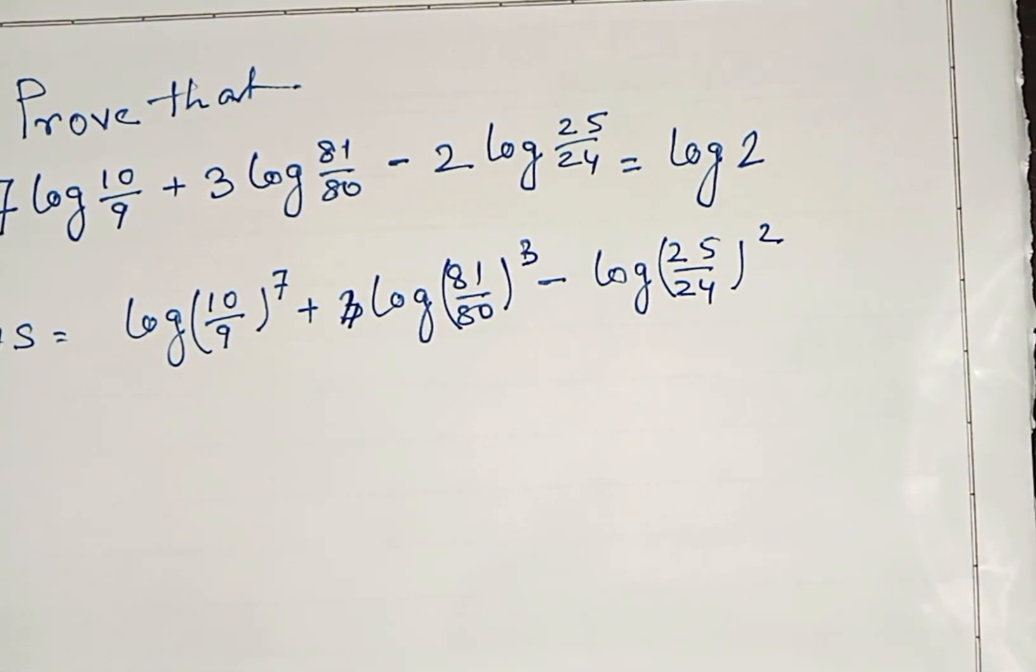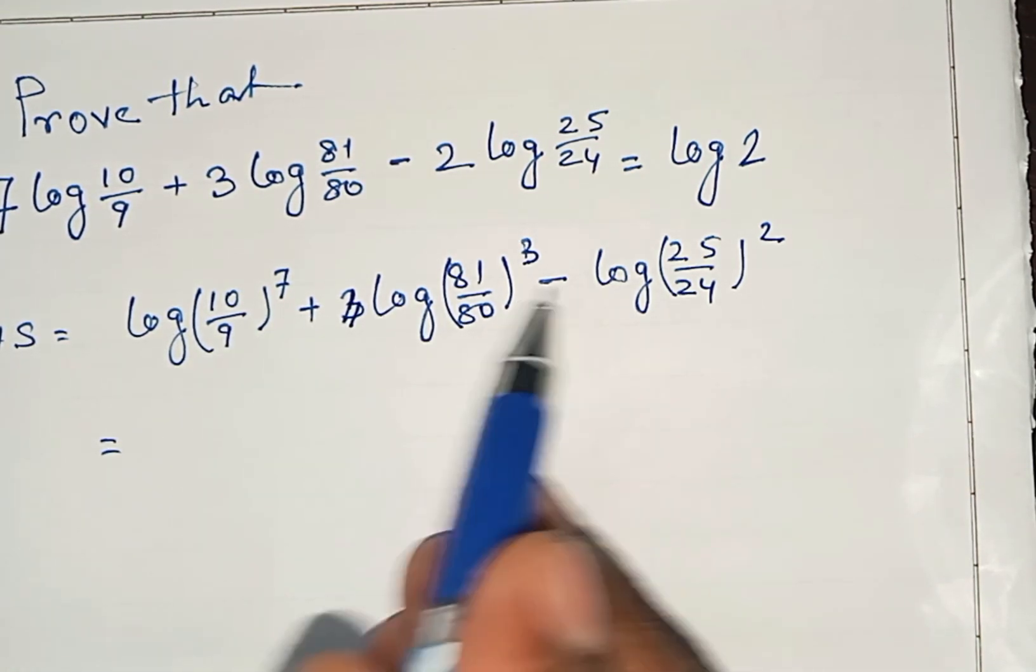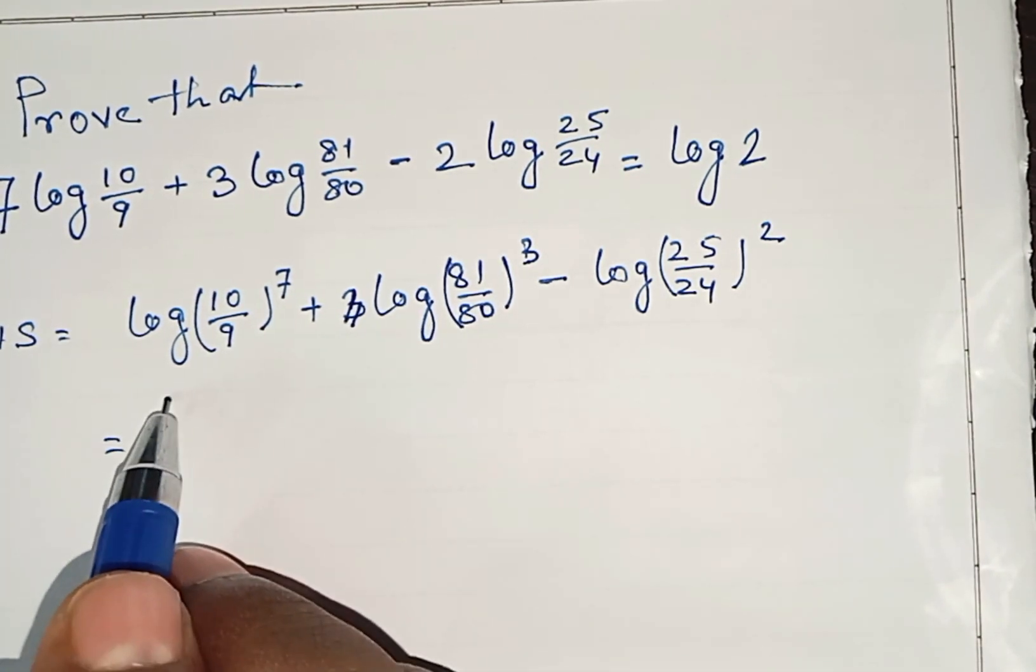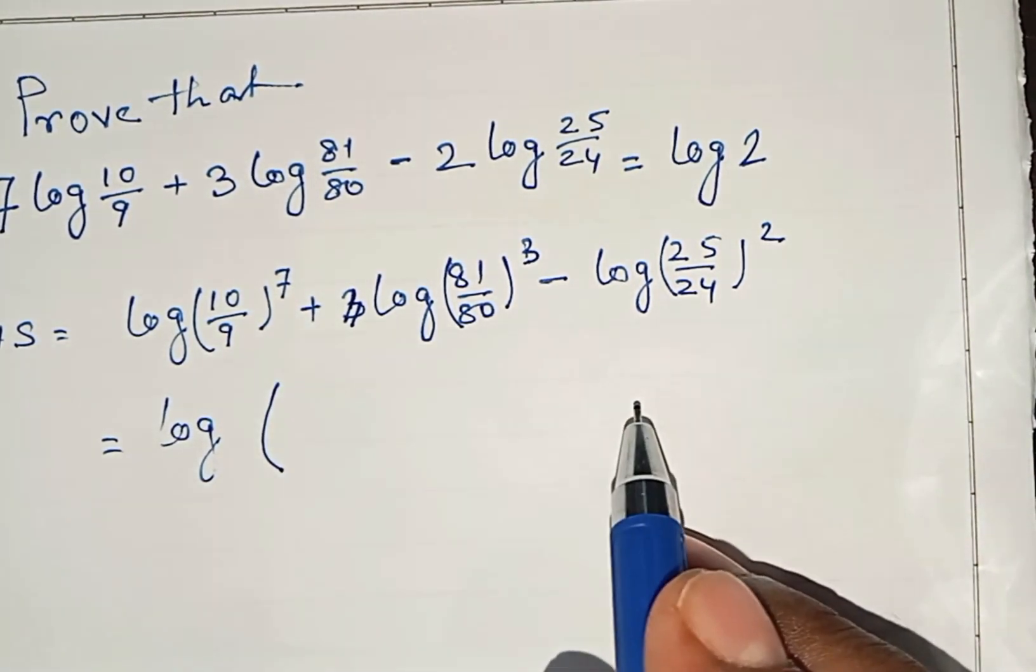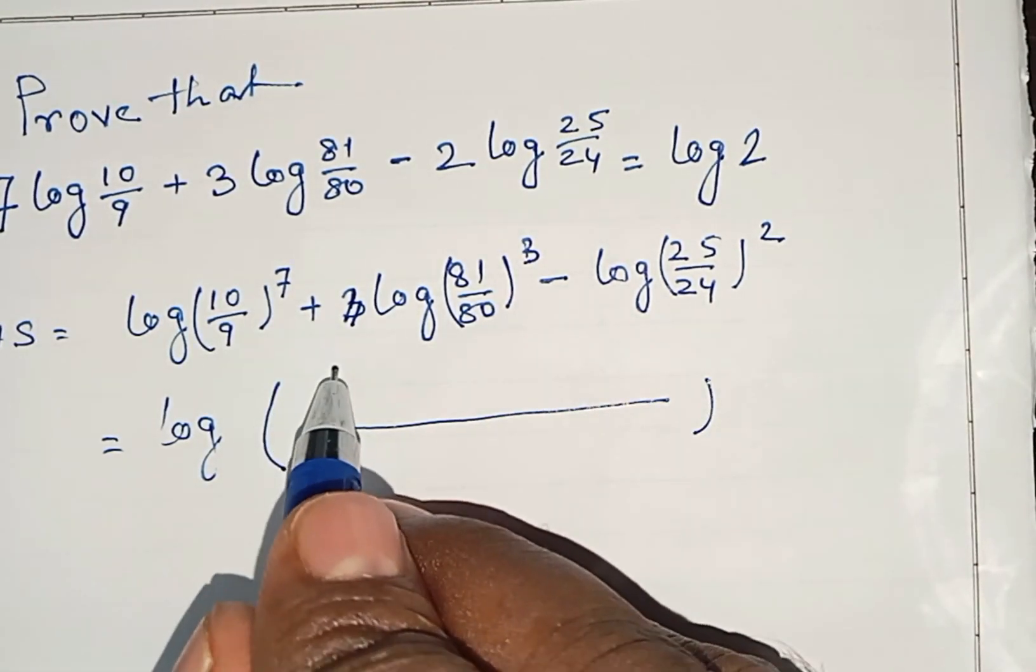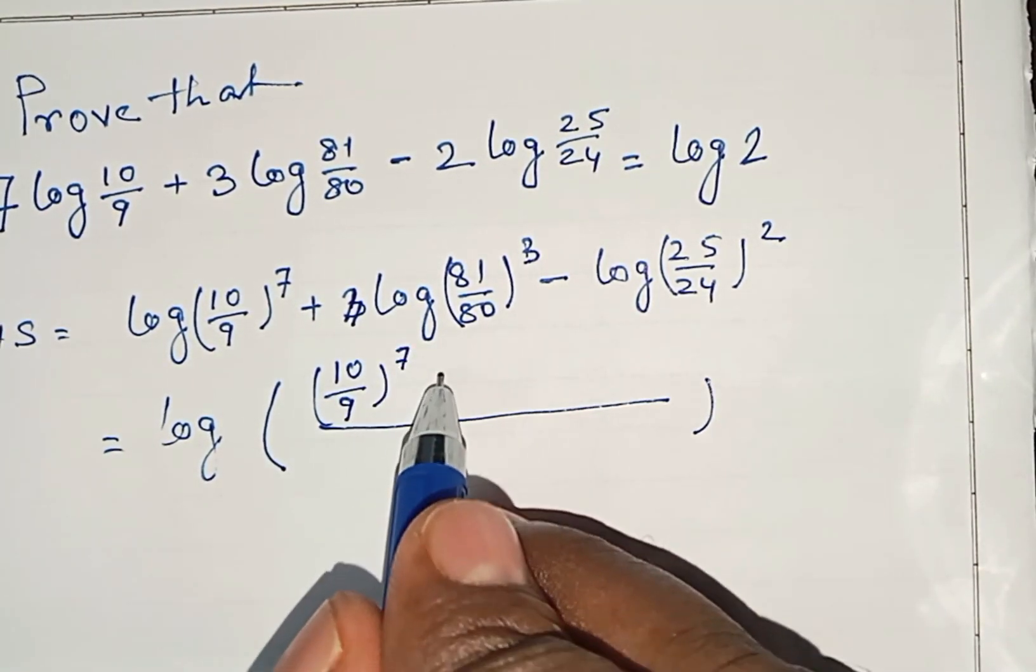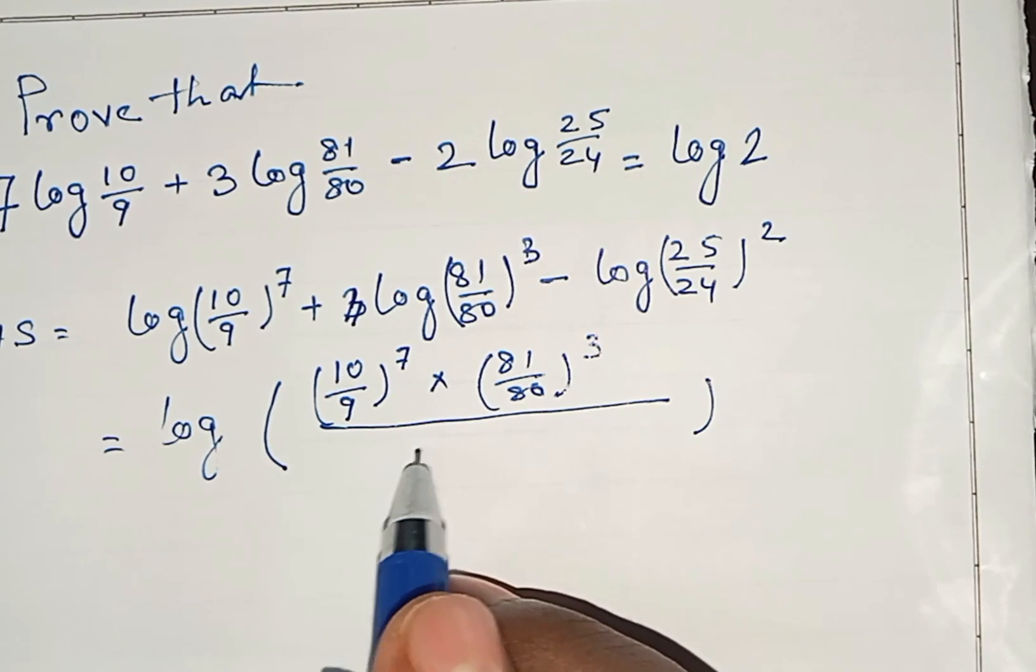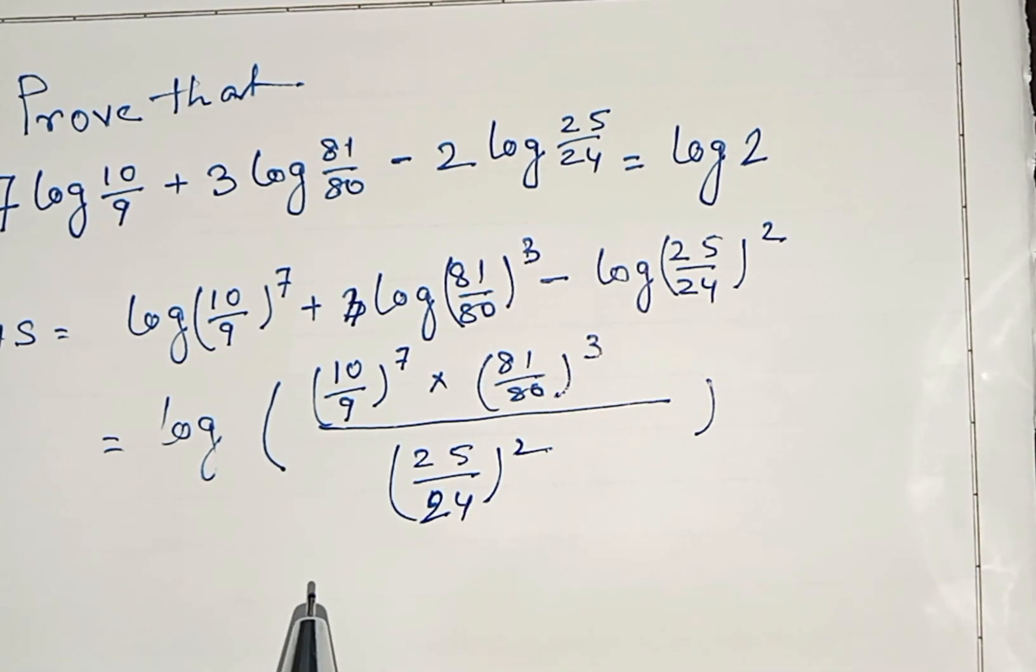So from this equation, as these two are plus and here it is minus, so these two will be multiplied and this will be in the denominator. So how can we write? We can write log of, at the numerator it is 10/9 to the power 7 multiplied by 81/80 cube, over 25/24 square.